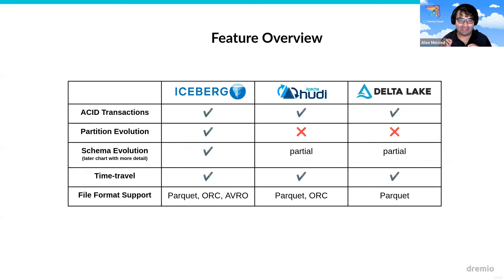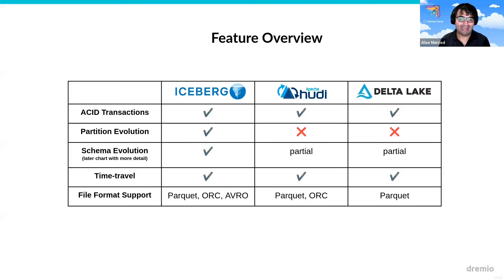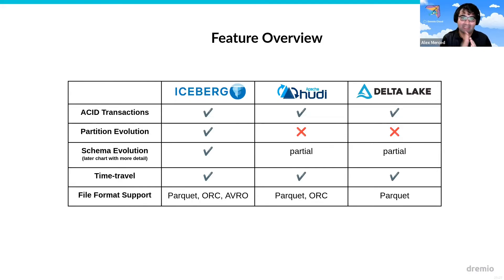Partition evolution is a feature that's unique to Iceberg. What partition evolution does is: let's say I'm partitioning the table by month, breaking up the data by month as I add data. Eventually I want to shift to organizing it by day. Pretty much in the status quo with Hive and the other table formats, what would happen is you would have to rewrite the table. But with Iceberg, you just actually change it, because it's a metadata transaction. Everything in Iceberg is metadata-focused. What happens is that going forward, you would just partition the data by the new partition scheme and don't have to rewrite all the old data — so there's no expensive table rewrite when you change the way you want to partition.